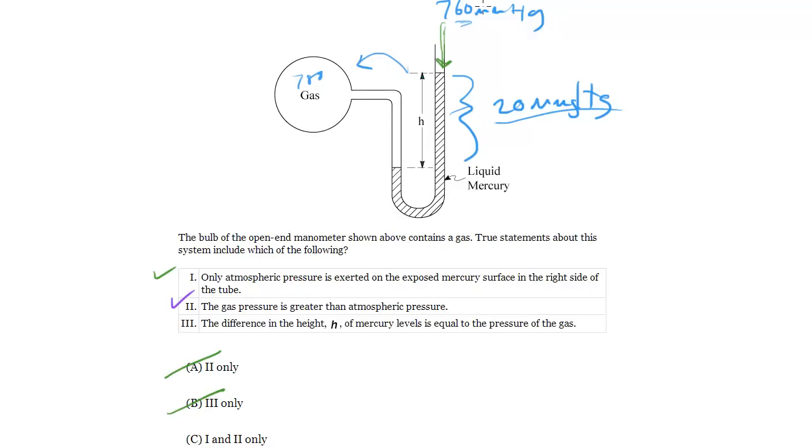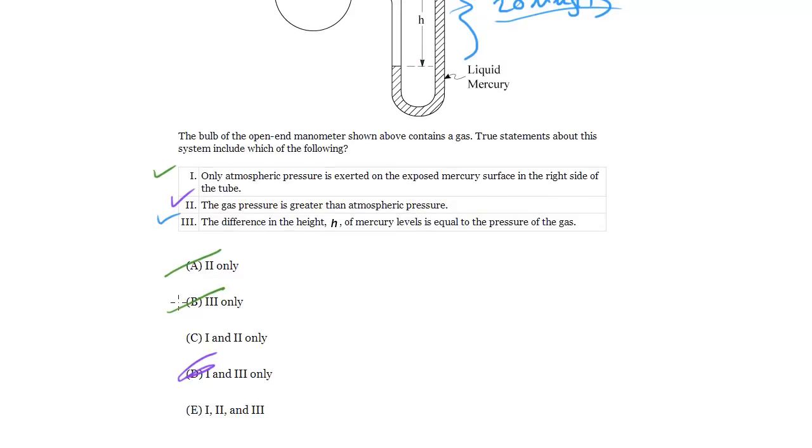So the pressure of the gas is actually the atmospheric pressure plus H, or minus H depending on which way the displacement goes. So statement III is related but not quite true. We can get rid of statement III, so the best answer is choice C.